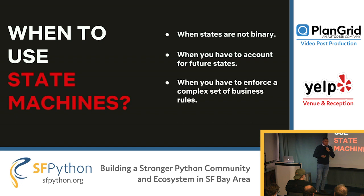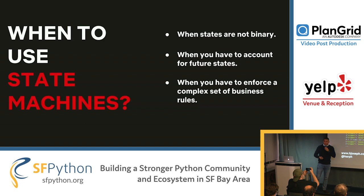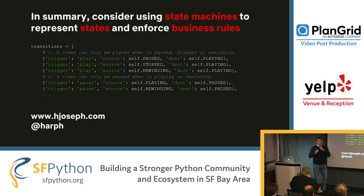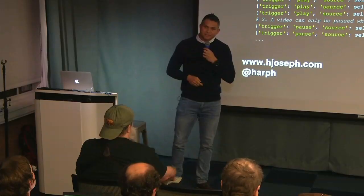And when you have to enforce a complex set of business rules. As you saw, we were only talking about a video player that is fairly simple — look at the amount of transitions we had. If we're talking about more complex businesses, these can get really hairy. So in summary, consider using state machines to represent states and enforce business rules. When you use booleans to do this, your code gets unreadable, unmaintainable, prone to errors, and really hard to test. When you use state machines, you remove complexity from the code and reduce the amount of unit tests you have to write. One important thing: state machines are not a silver bullet. Know your tools, think about the problem you're trying to solve, and decide if adding a state machine makes sense and reduces complexity.